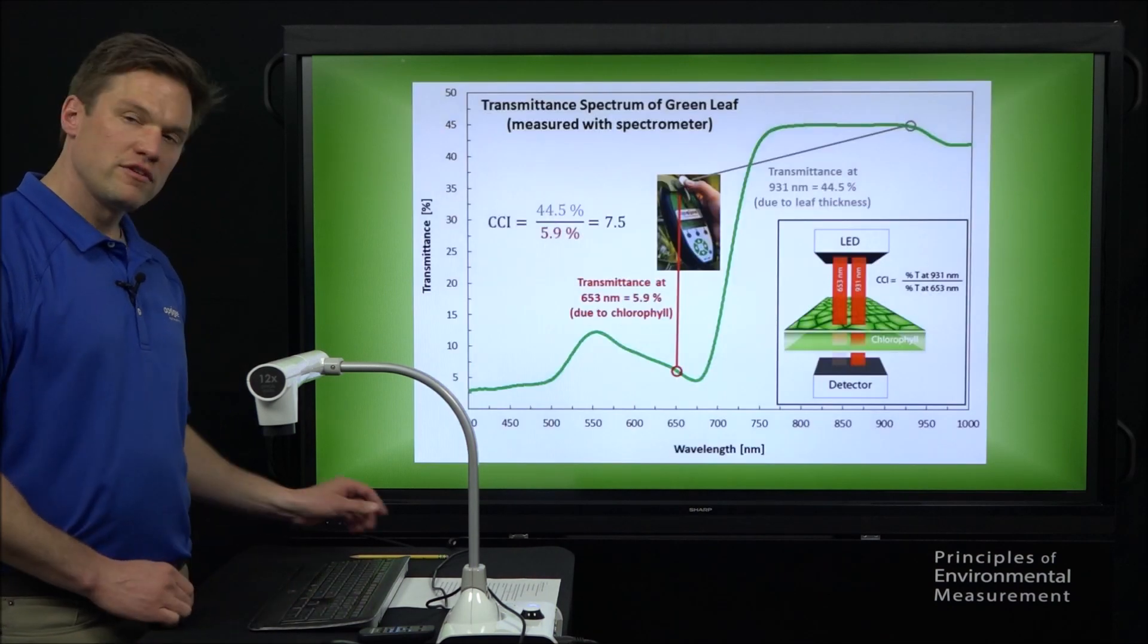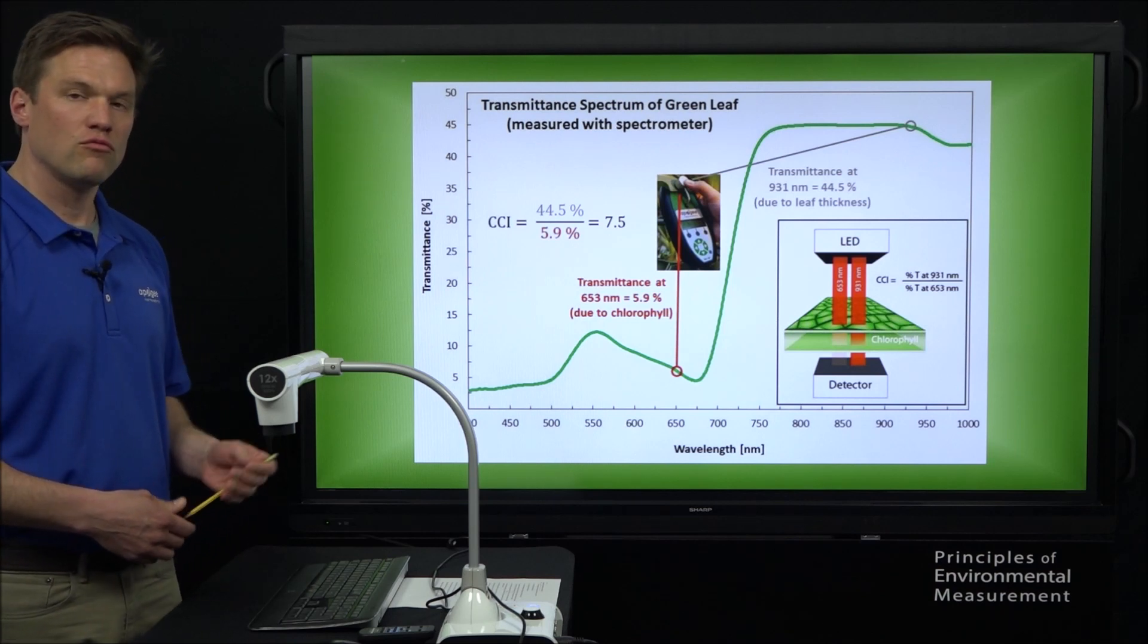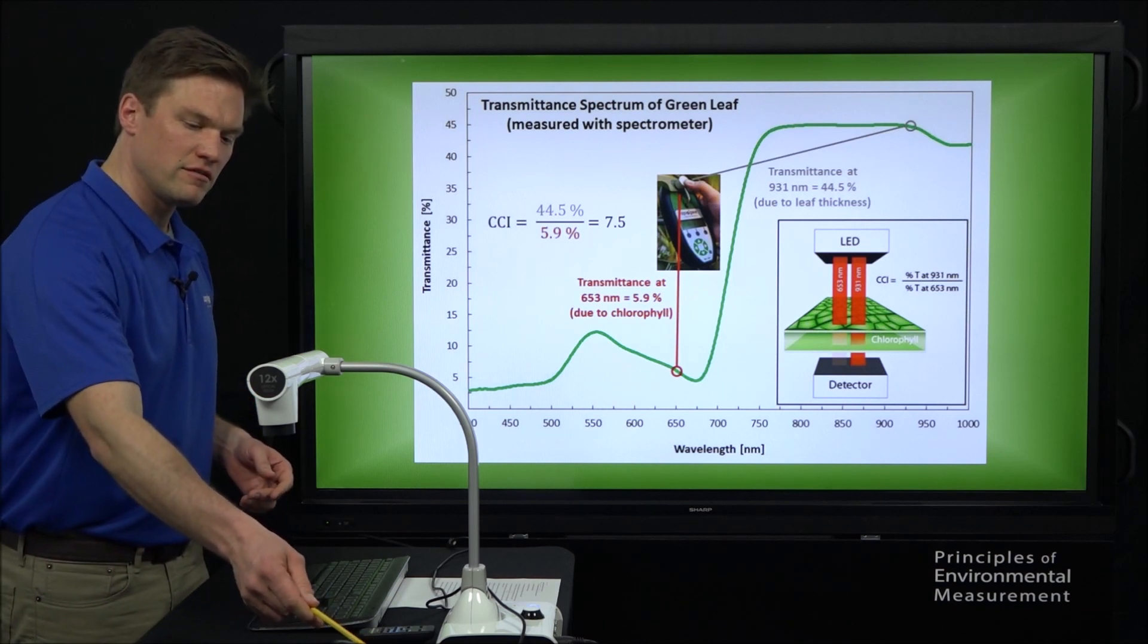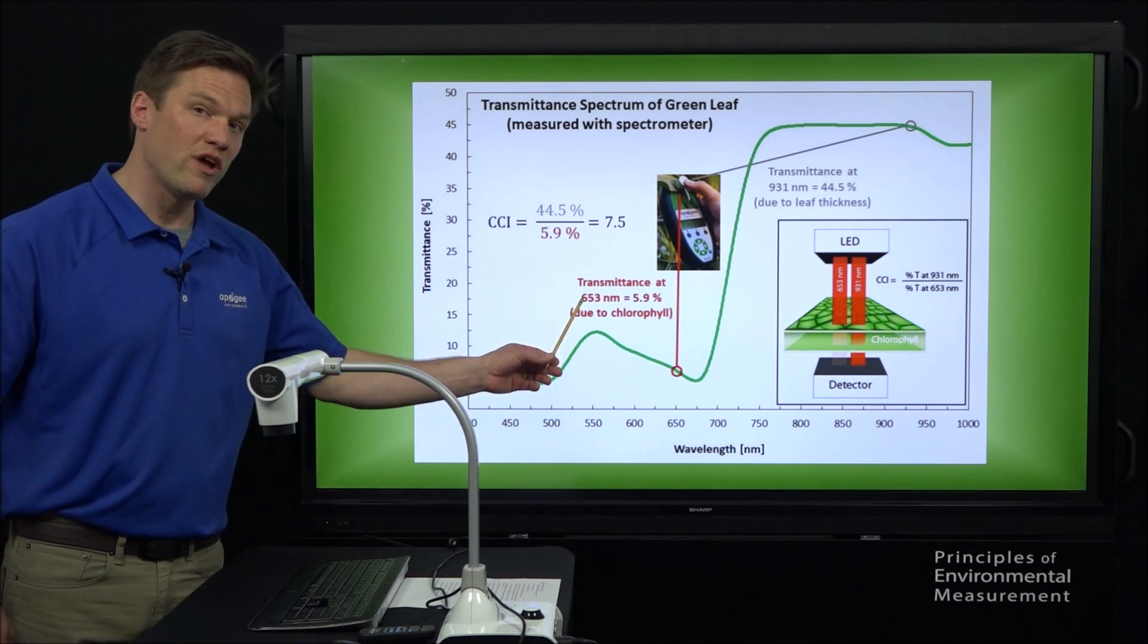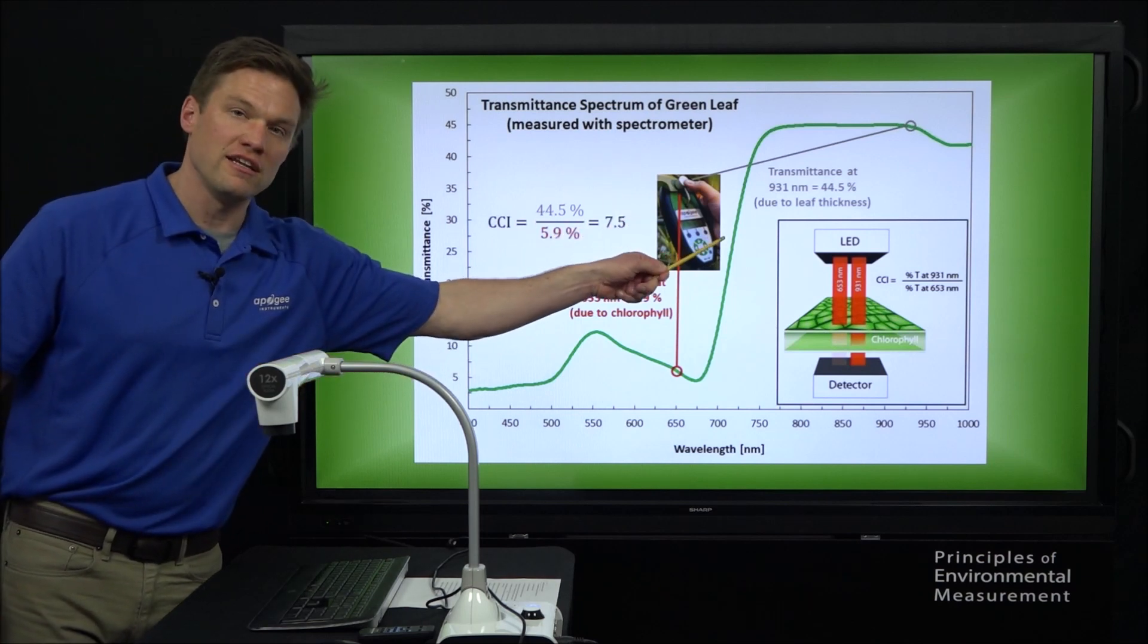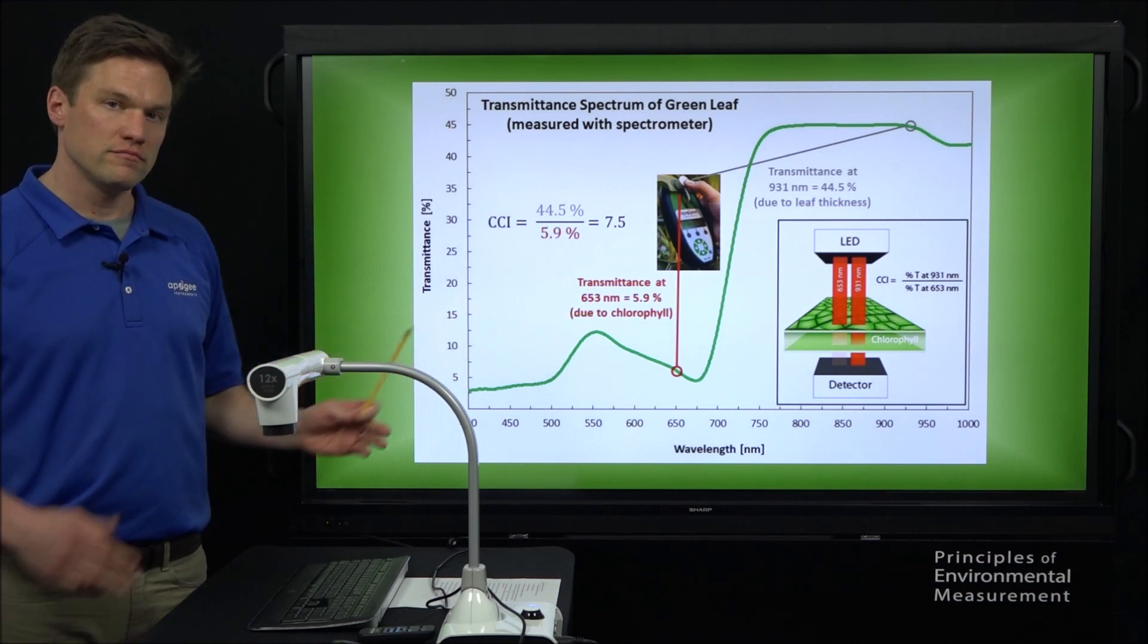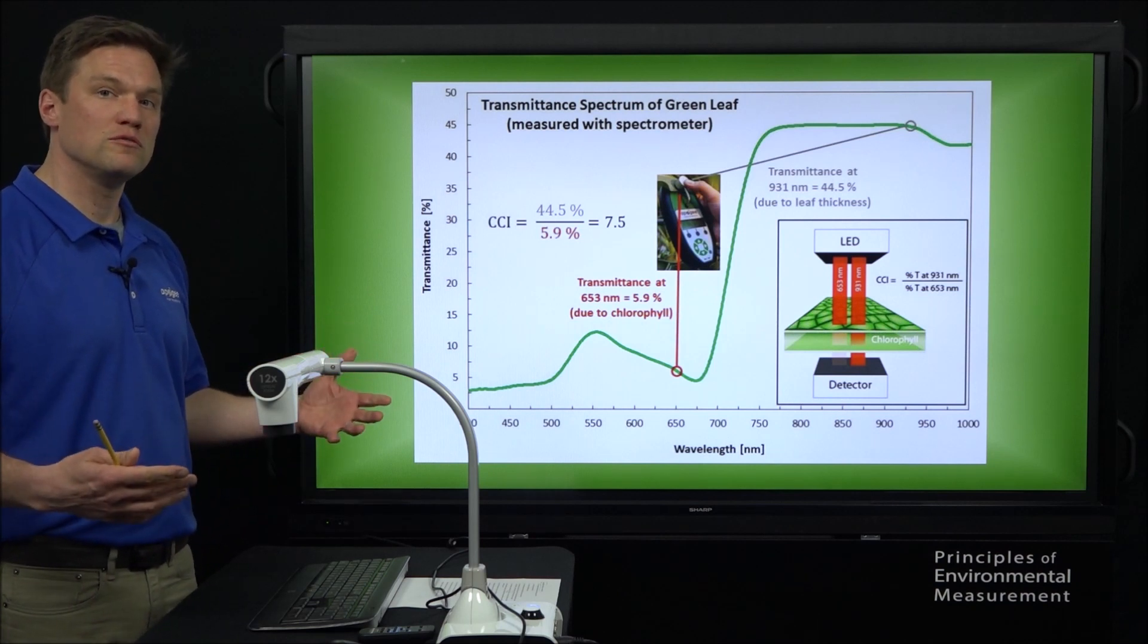So very briefly, the operation of this meter is based on the transmittance of light at red and near-infrared wavelengths through a plant leaf. This item has two LEDs in it, one of which emits light in a red wavelength of 653 nanometers. The other one emits light in a near-infrared wavelength of 931 nanometers. Now the red wavelength, the plants can use that type of light for photosynthesis, and so most of that light gets absorbed and used by the leaf.